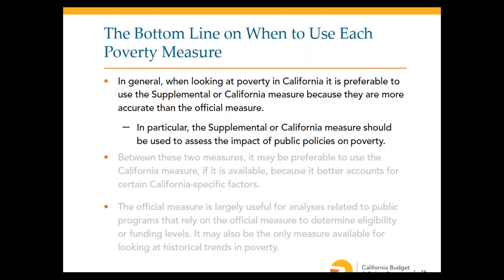The supplemental or California poverty measure should be used to assess the impact of public policies on poverty, since many anti-poverty policies involve non-cash resources — like food assistance, housing assistance, or tax credits — which will not show up in the official poverty measure. Between the two, the California measure may be preferable when available, because it better accounts for California-specific factors.